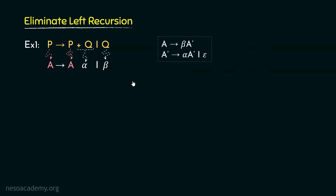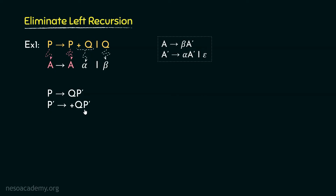We can eliminate the left recursion by converting this production into the standard form. From the start symbol, we should first generate beta, then a new non-terminal — in this case A prime. From that newly formed non-terminal, we generate alpha followed by that newly formed variable or epsilon. So here, P can be rewritten as Q followed by a new non-terminal P prime. P prime can be rewritten as plus Q — which is alpha — followed by P prime or epsilon. This is a right recursive production, as P prime reappears as the rightmost non-terminal on the right hand side.